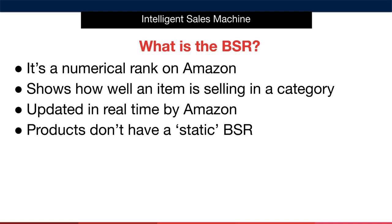Why? Because these items sell less in that category, and it takes far less for those items to move than if, for example, the item had a low BSR of 200. The item would essentially have to completely stop selling for it to fall from 200 to, say, 12,000.